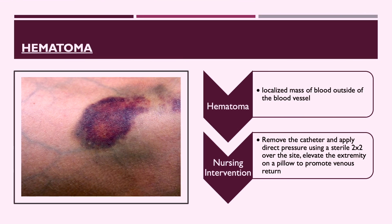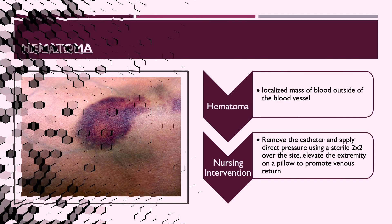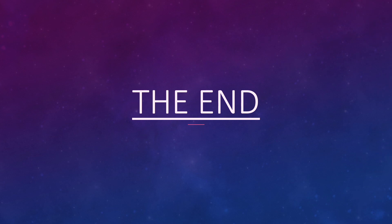A hematoma is a localized mass of blood that has leaked outside of a vessel, usually due to technique or needle size — if the needle is too large it may puncture through the vessel. Nursing management includes removing the catheter, applying direct pressure with a sterile 2x2 gauze pad to the site, and elevating the extremity to promote venous return.